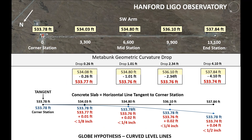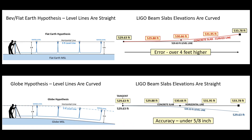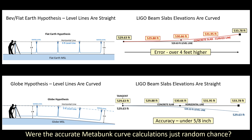I did the exact same thing for the Southwest Arm, and in that case the accuracy is less than one half inch. Comparing both models: the Bev flat earth hypothesis gives us a beam slab that curves over four feet higher from one end to the other, while the globe hypothesis gives us a beam slab that is straight with an accuracy under five-eighths of an inch. I really doubt this was random chance, because in geodetic surveying, level lines of equal elevation are curved lines.